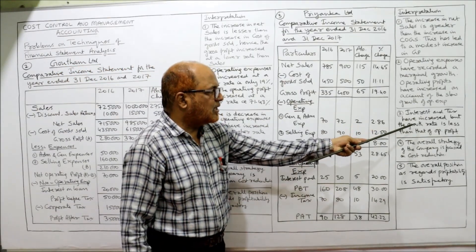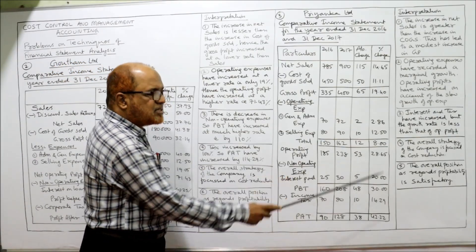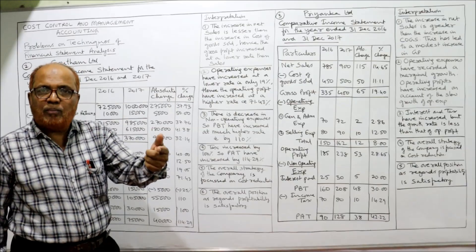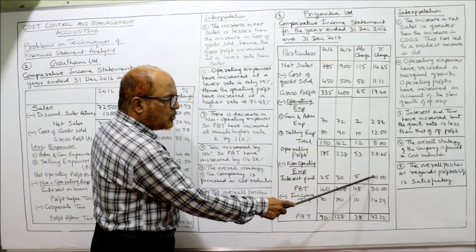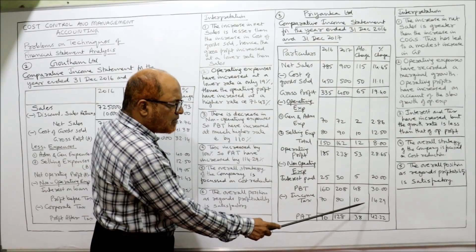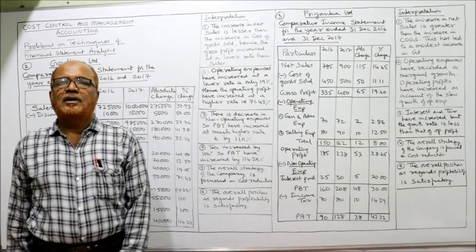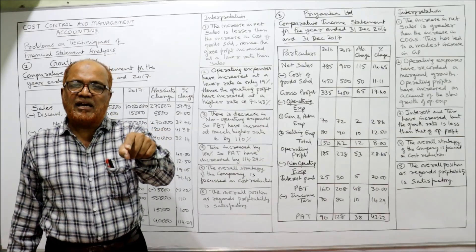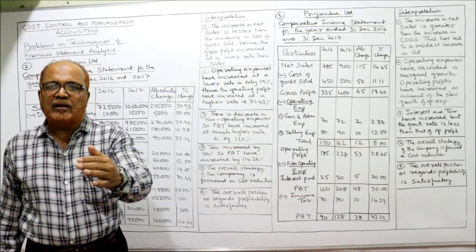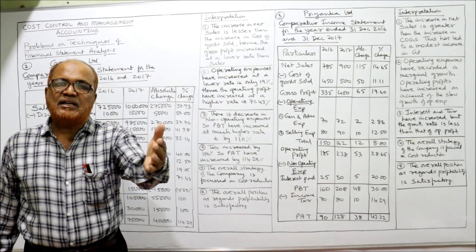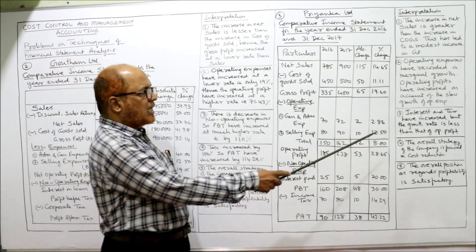Third interpretation: interest and taxes have increased, but the growth rate is less than that of operating profit. Operating profit increased by 28.65%, whereas interest on loan increased by only 20%, and income tax increased by only 14.29% — both less than 28.65%. Since interest and income tax increased at a lower rate than operating profit, profit after tax increased at a higher rate of 42.22%.